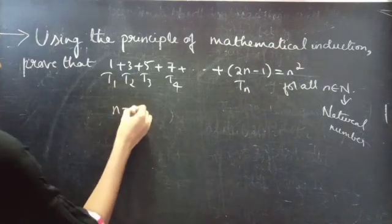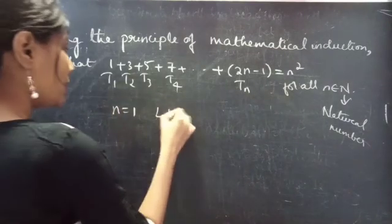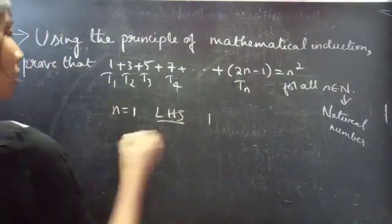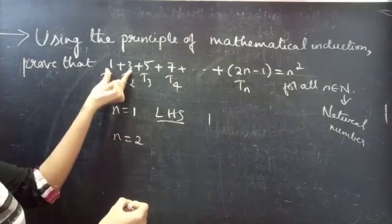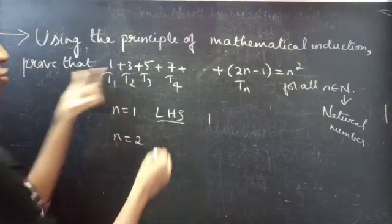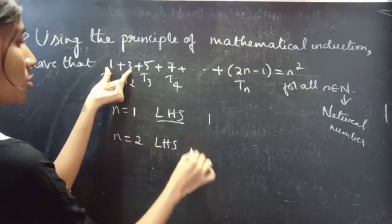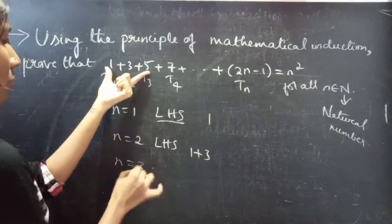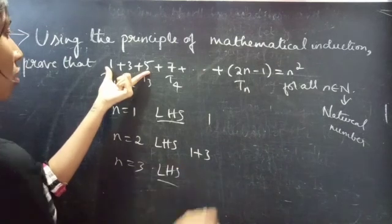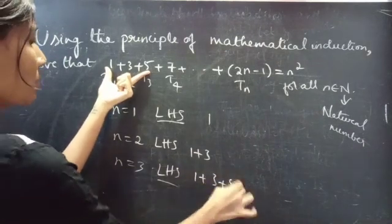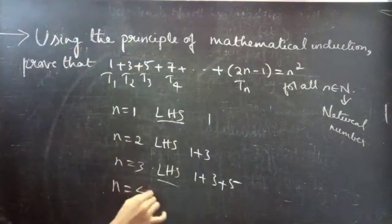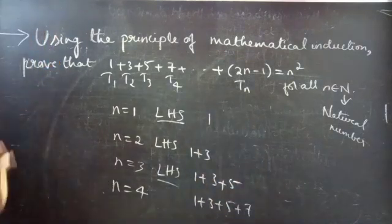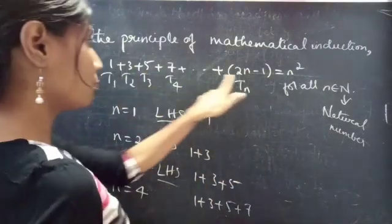When n equals to 1, you will take only the first term from LHS. Likewise, when n equals to 2, you will take the sum of the first 2 terms from LHS. Likewise, when n equals to 3, you will take the sum of the first 3 terms from LHS: 1 plus 3 plus 5. Likewise, for n equals to 4, the sum of the first 4 terms. For n equals to k, you will take the sum of the first k terms.